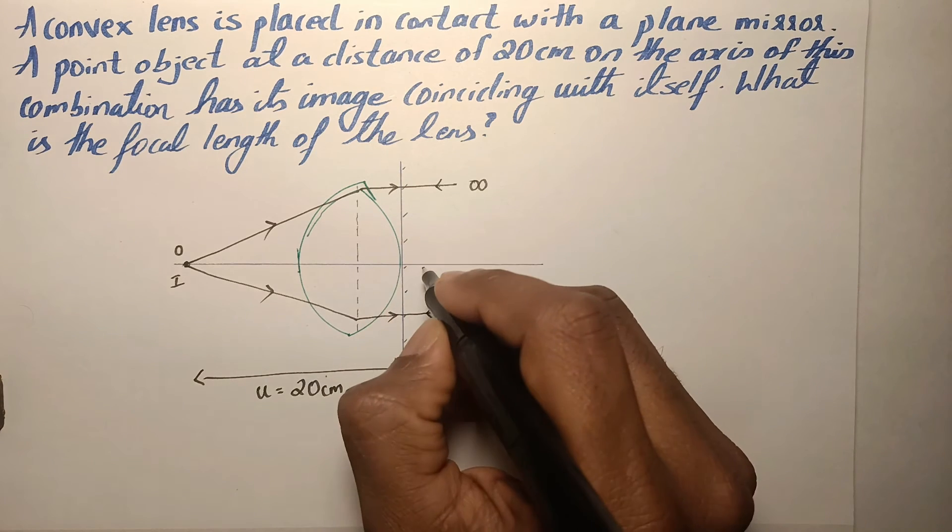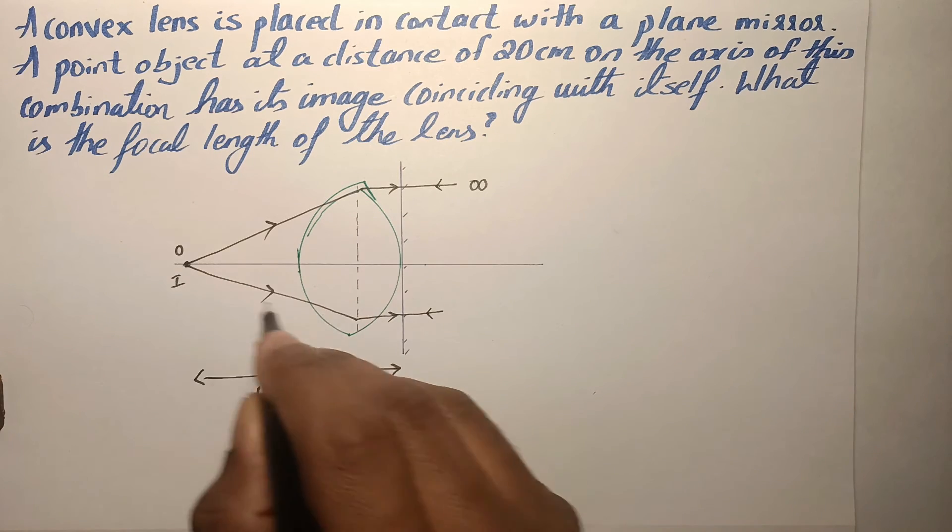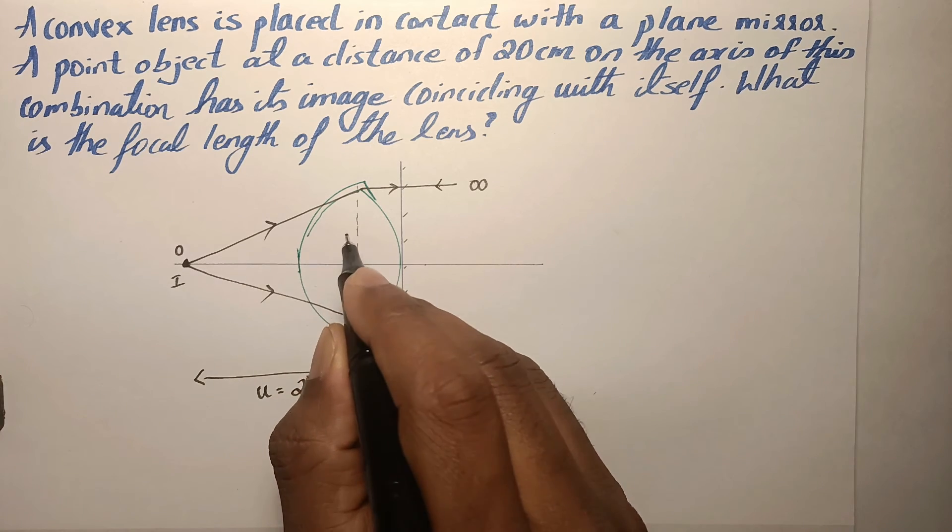So when a ray parallel to the principal axis falls on a convex lens, it converges the light rays to a point which is the focus of this lens.